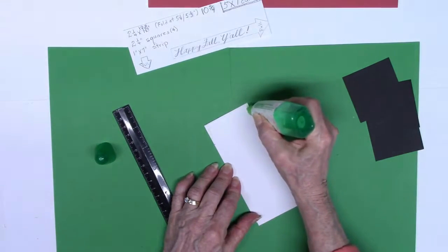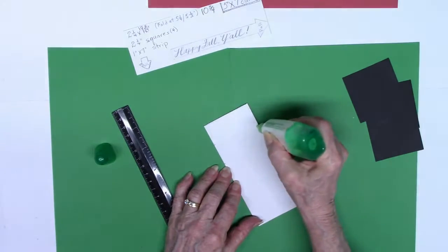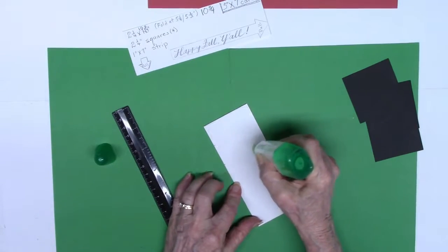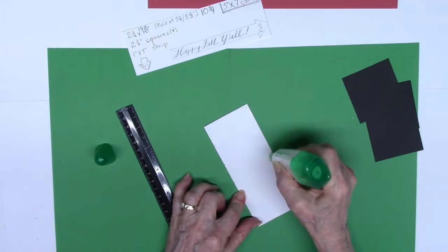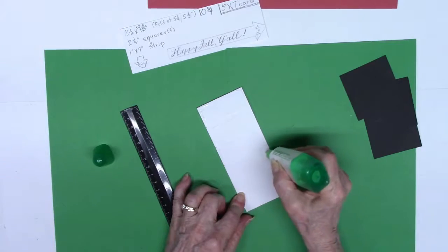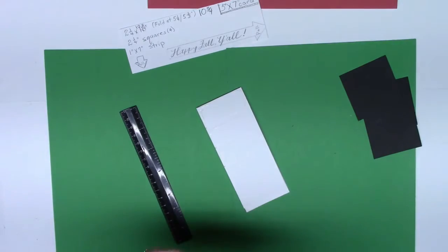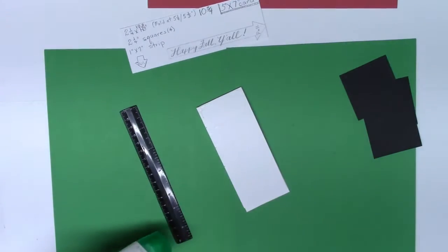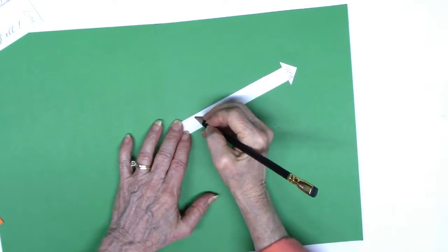I'm going to take my Tombo mono multi glue and go around each little rectangle separately, one inch, about the two and a fourth inch width. What I didn't show you right now but I will in just a little while is those one inch sections also need to be scored and folded, and you will see why.